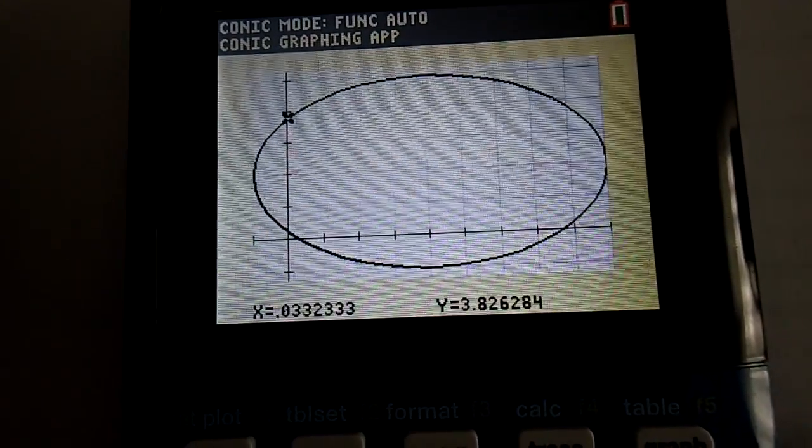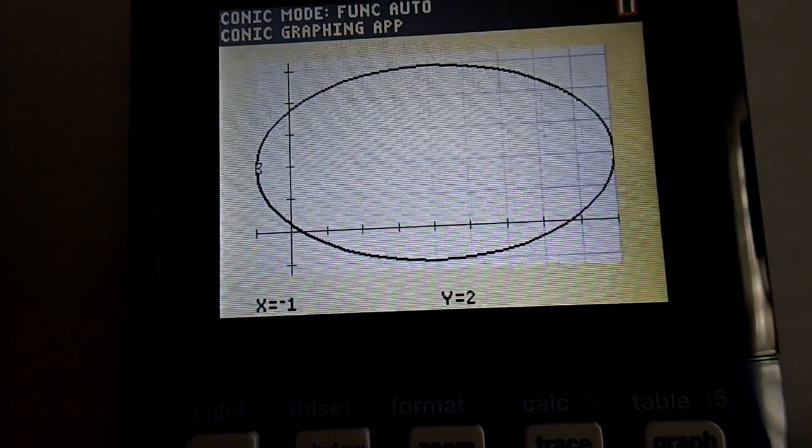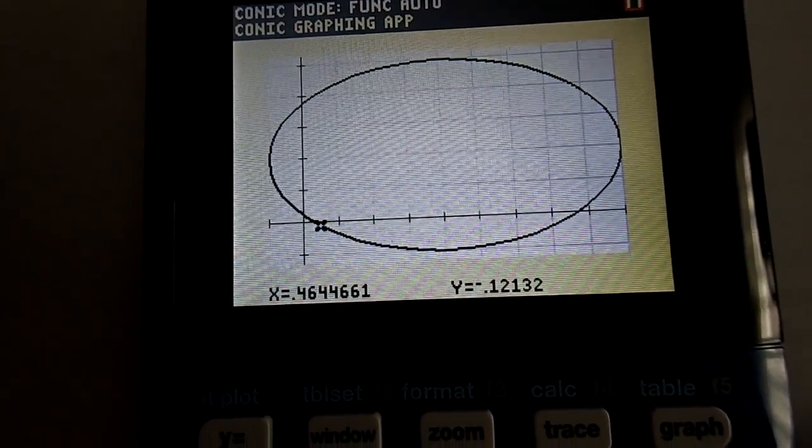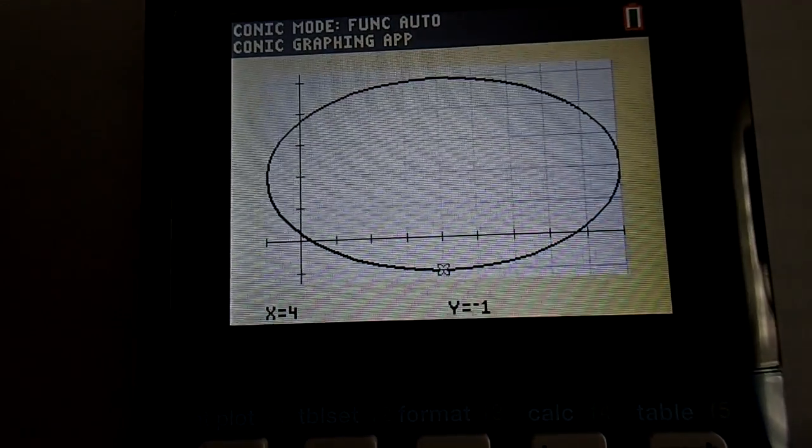Ok, that is it. That is how to graph a horizontal ellipse on the TI-84 plus CE graphing calculator. If you like this video, please give it a thumbs up and please subscribe to this channel.